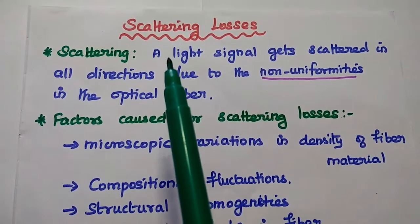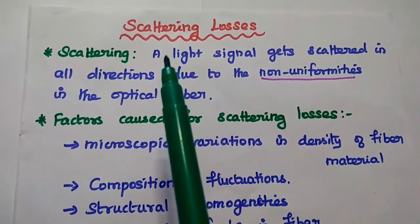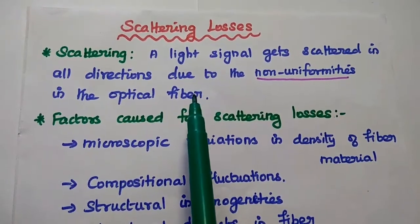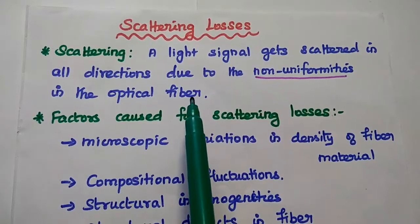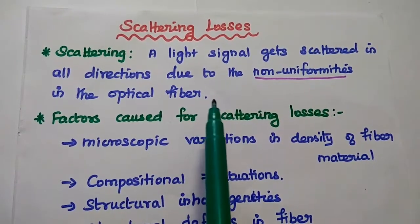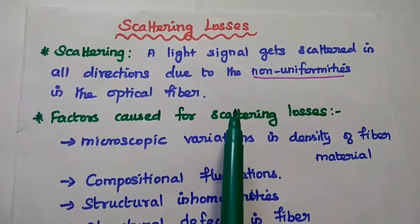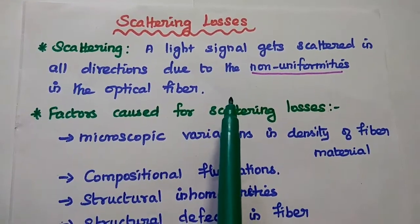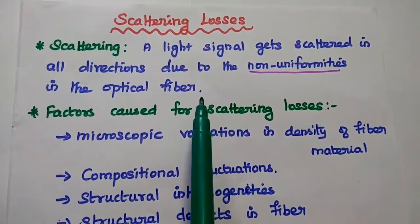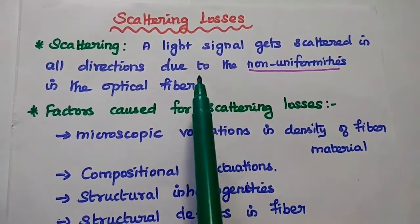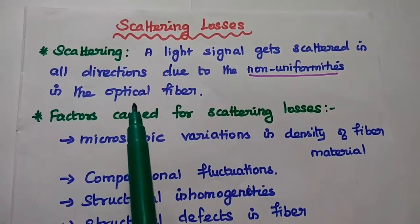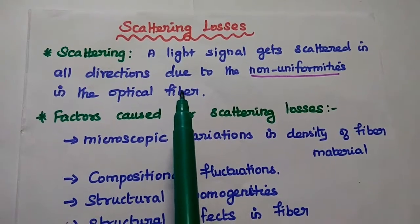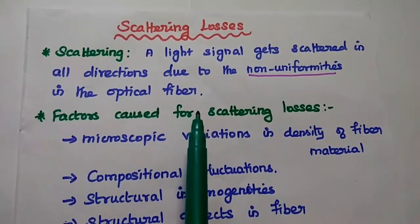Now we are going to discuss scattering losses in optical communication. In general, glass fiber is composed of several oxides and a randomly connected network of molecules. Due to this, there is a variation in the density of molecules and compositional structural fluctuations. Due to the non-uniformities in the optical fiber, the light signal gets scattered in all directions. That loss is known as scattering loss.